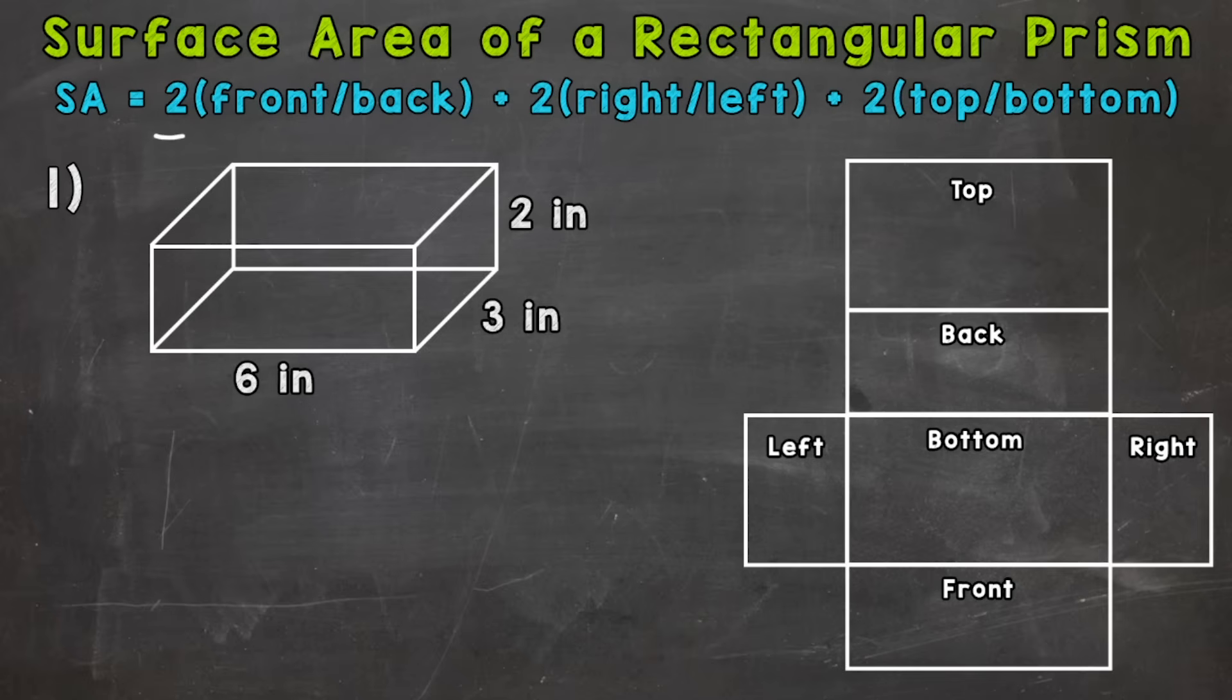Now, I have everything multiplied by 2 because, for example, if we pick the front or back, let's say we pick the front here. If we find the area of the front, we can multiply that by 2 because the back is the exact same as the front.